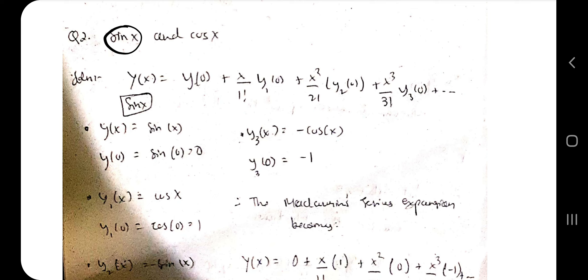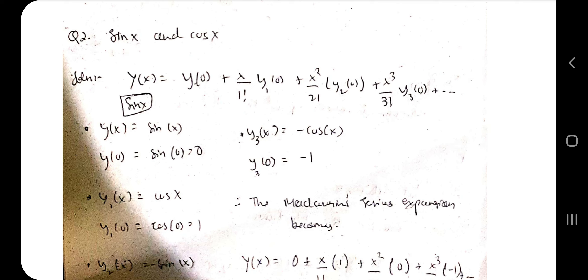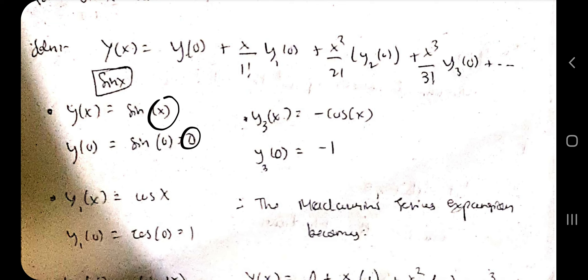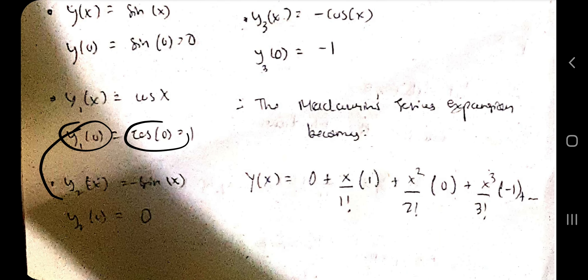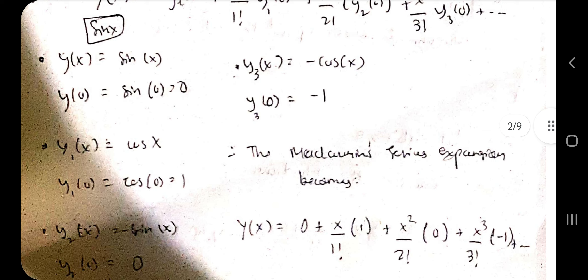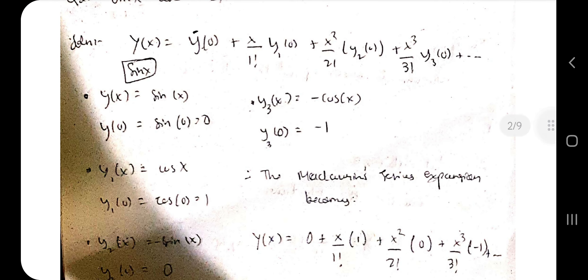Considering another example: y(x) = sin x. To find the Maclaurin series, first find y(0) = sin(0) = 0. Then y₁(0): differentiate sin x to get cos x, and cos(0) = 1. Then y₂(0): differentiate cos x to get -sin x, and -sin(0) = 0. Keep differentiating to find all values from y(0) through y₃(0), then substitute them into the formula.